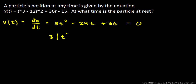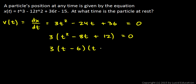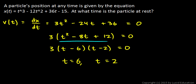Factor out a 3: 3(t² - 8t + 12) = 0. The trinomial factors as (t - 6)(t - 2) = 0, which equals 0 when t = 6 or t = 2. So at those 2 times, the velocity is 0 — that's when the particle is at rest.